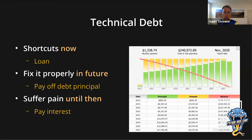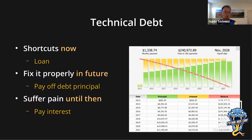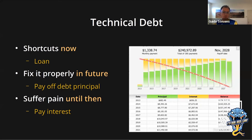Technical debt is a respectable term — a concept introduced by Walt Cunningham using a financial metaphor. Basically it says: we want to ship more features now than we can actually build properly, so instead of building it properly, we take shortcuts. And these shortcuts can be seen as a loan that we take out — something we need to pay back in the future. We need to remove the shortcuts and replace them with proper solutions. Until we do that, we will suffer from the nastiness that results from those shortcuts.